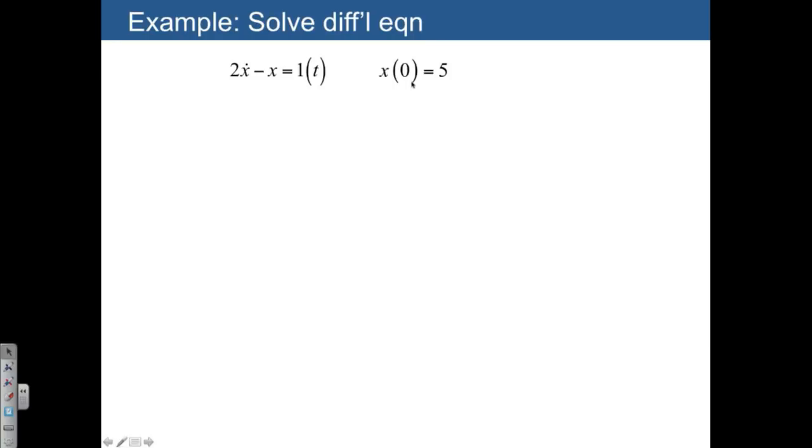And if you recall, the first step is to find the homogeneous solution, where we treat the input as zero for the time being. And we replace the derivatives with s. So this is the first derivative, we're going to replace it with s to the one power.